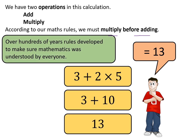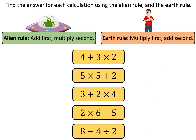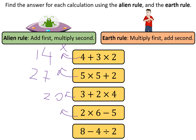Now let's find the final answer using the alien rule and the earth rule. Using the alien rule — which is incorrect — you'd do 4 plus 3 first, which is 7, then 7 times 2 is 14. That is incorrect. For the other examples, the alien rule gives: 25 plus 2 equals 27; 5 times 4 equals 20; 2 times 1 equals 2 (because 6 minus 5 is 1); and 8 minus 4 is 4, divided by 2 is 2. These are all the incorrect answers.